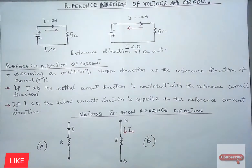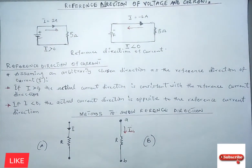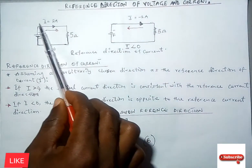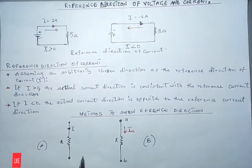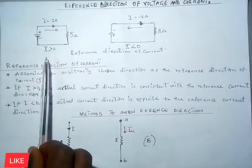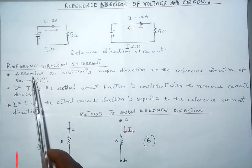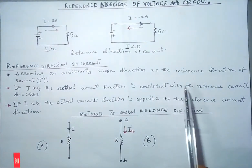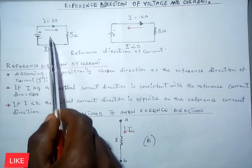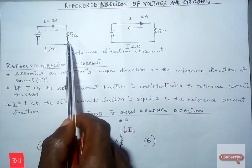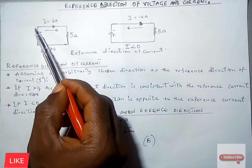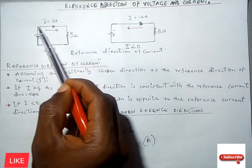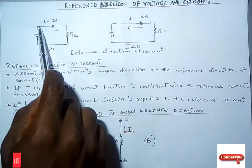When we have assumed directions on both sides of a circuit, it is important because it may be very difficult to determine the actual current direction in a particular circuit. That is why it is advisable to make use of the assumed direction. After all calculations are done, there are two possible outcomes. If our current I eventually turns out to be greater than zero, the actual current direction is consistent with the reference current direction.